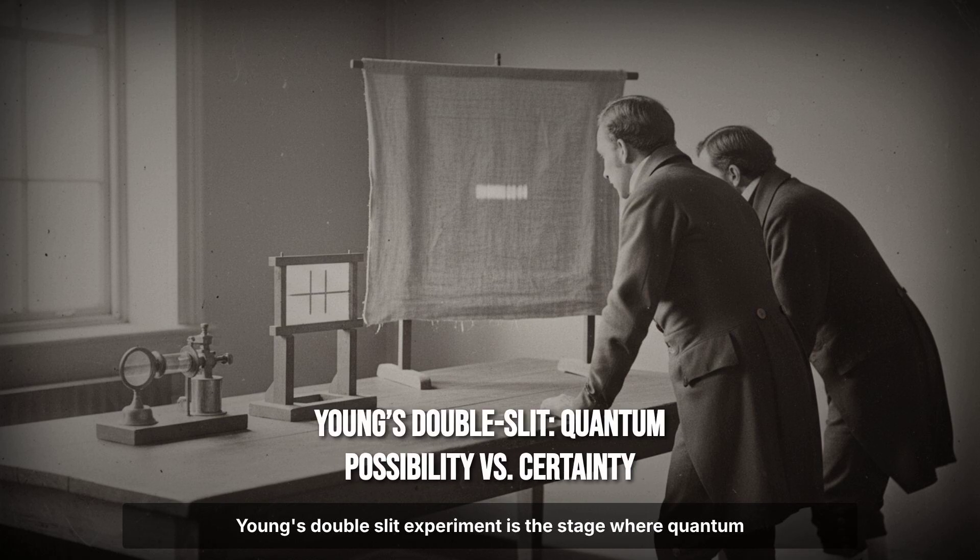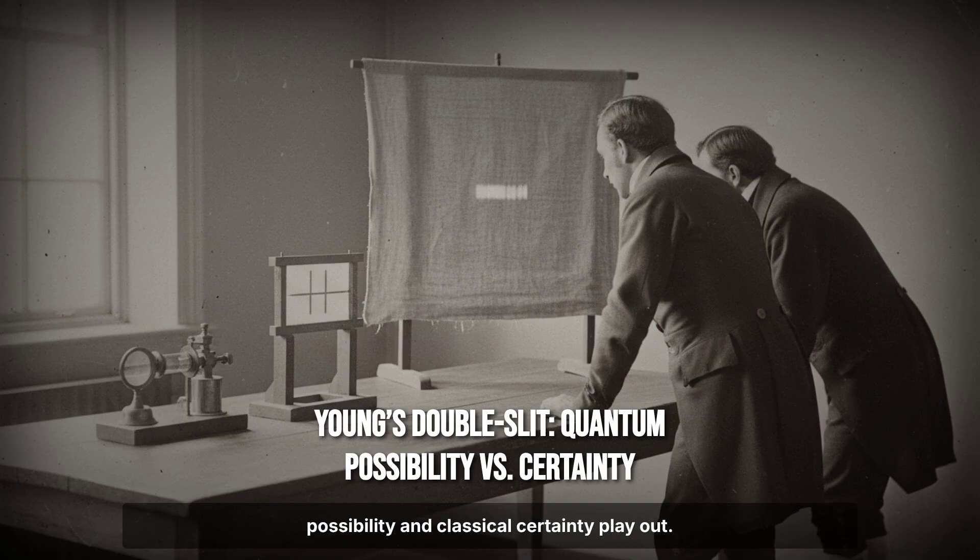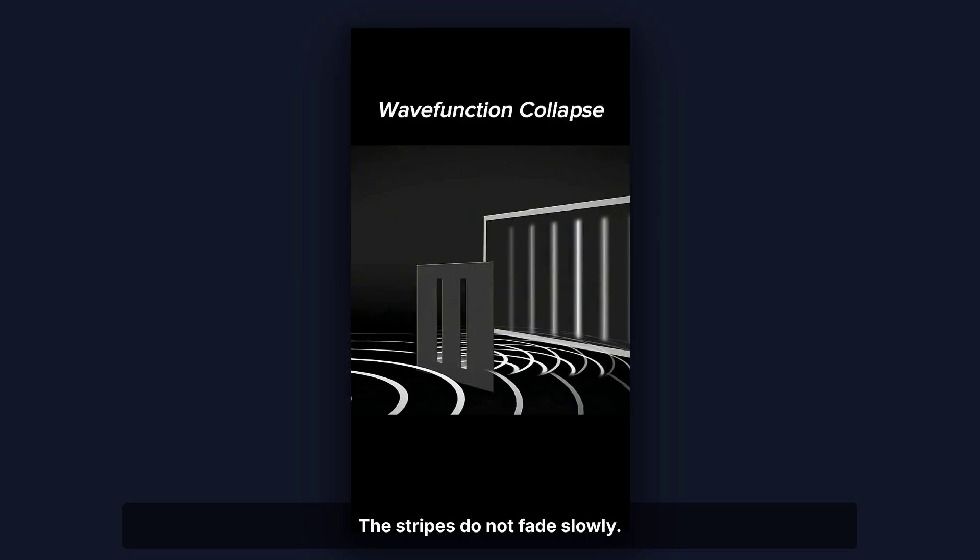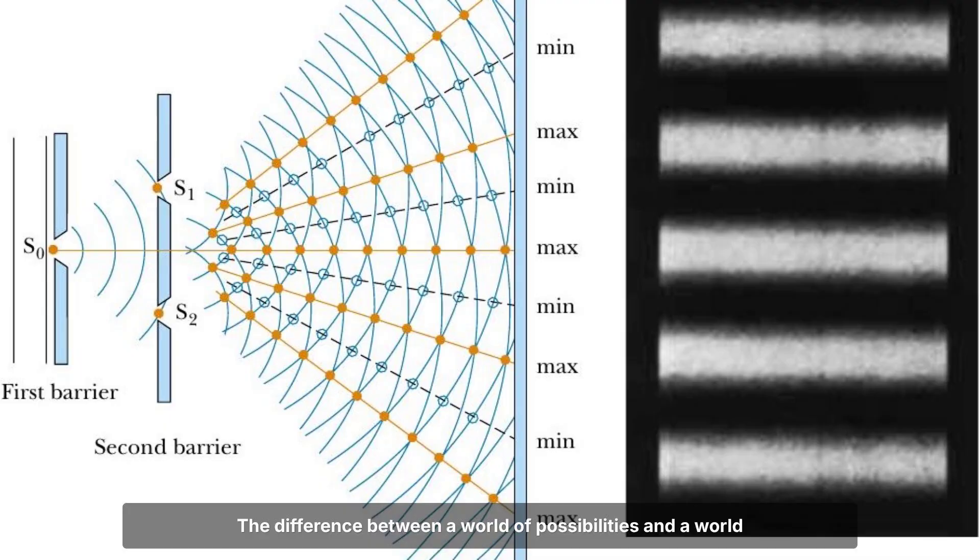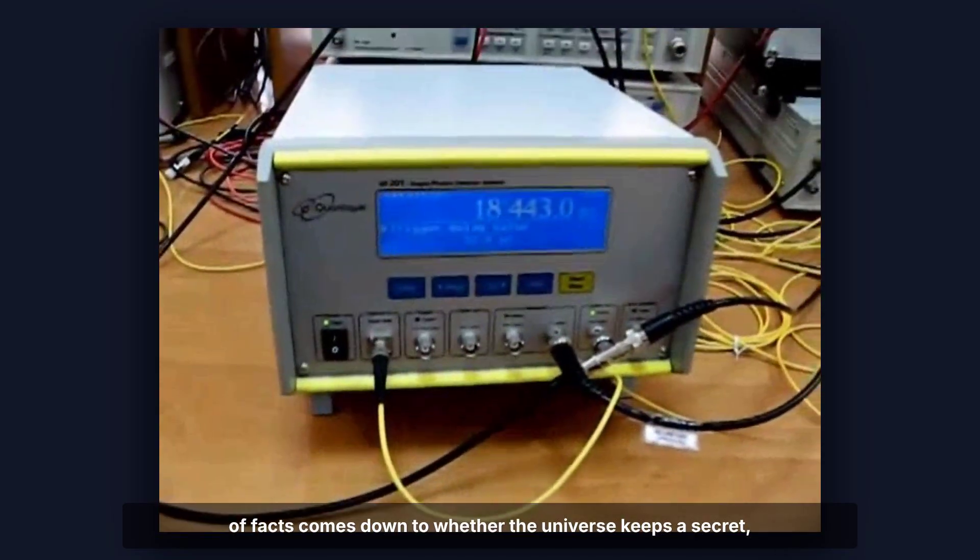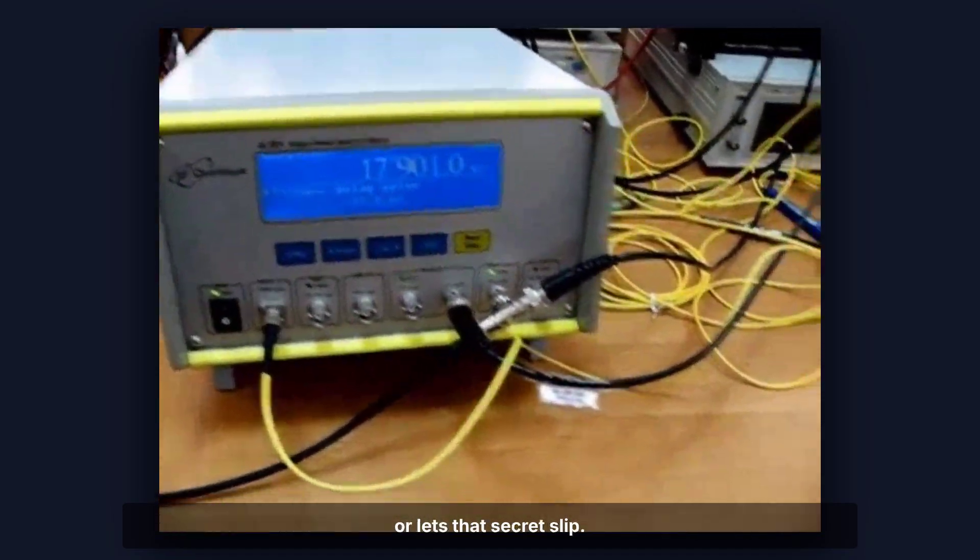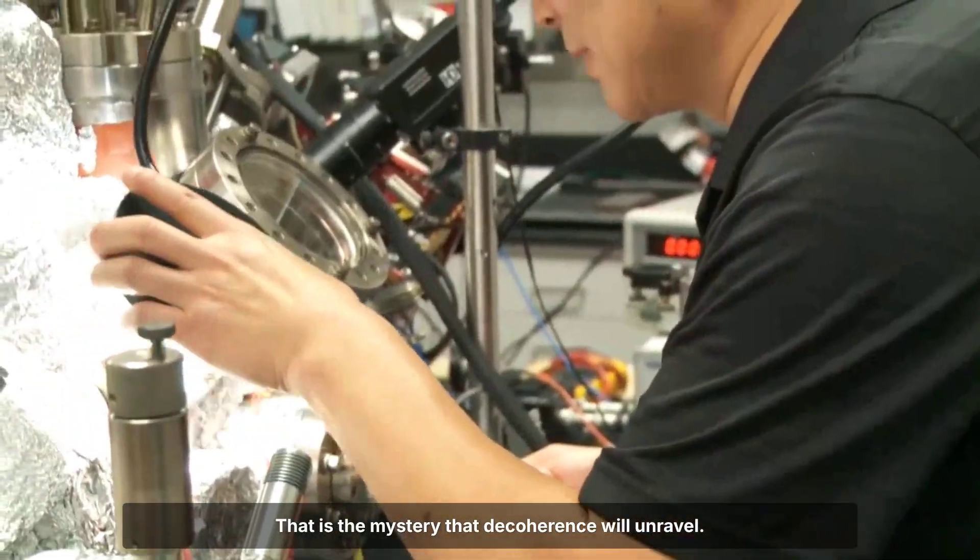Young's double slit experiment is the stage where quantum possibility and classical certainty play out. The stripes do not fade slowly. They vanish as soon as the environment learns too much. The difference between a world of possibilities and a world of facts comes down to whether the universe keeps a secret or lets that secret slip. That is the mystery that decoherence will unravel.